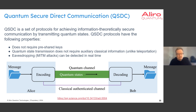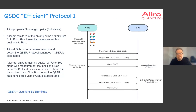We've talked in previous webinars about teleportation, but now we'll talk about quantum secure direct communication — another class of transmission methods we can use on a quantum network. In QSDC, we do not require pre-shared keys, which distinguishes it from QKD. The quantum state transmission does not require auxiliary classical information, unlike teleportation. Another property is that eavesdropping can be detected in real time.